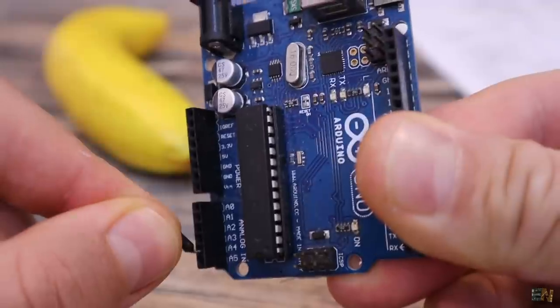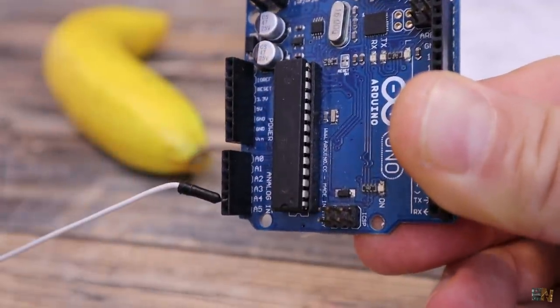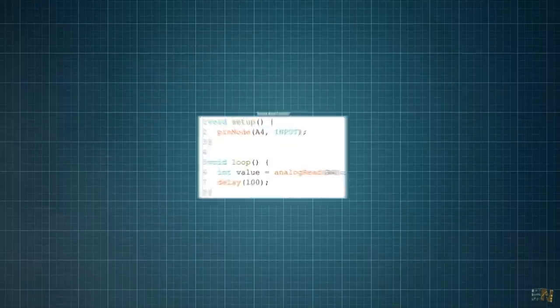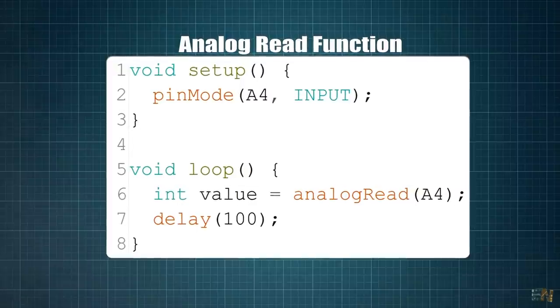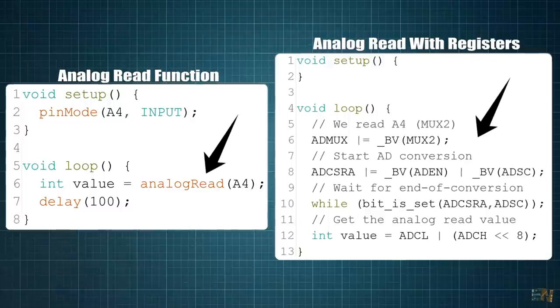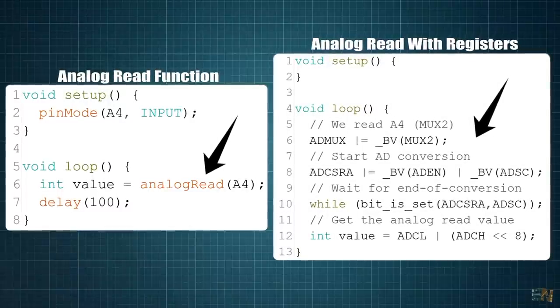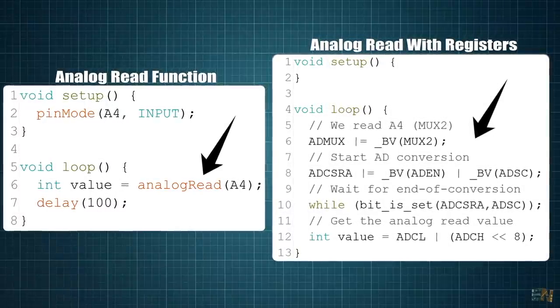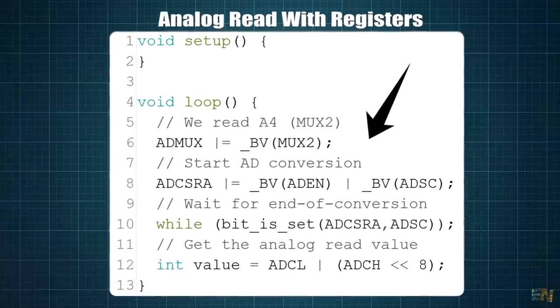Let's say that you want to read the analog input on A4. So you would do in the code something like this, right? But using registers it would be something like this. Basically the analog read function already does this internally. So let's see what each of these lines in the code is supposed to do.